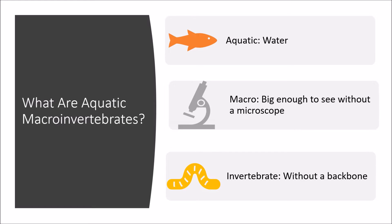What are aquatic macroinvertebrates? Aquatic means water, macro means big or big enough to see without using a microscope, and invertebrate means without a backbone. So an aquatic macroinvertebrate is a water bug that we can see with our naked eye.